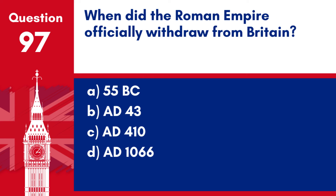Question 97. When did the Roman Empire officially withdraw from Britain? a. 55 BC. b. AD 43. c. AD 410. d. AD 1066.